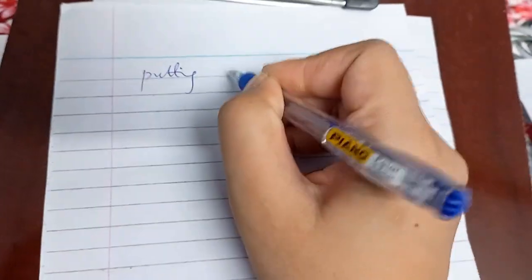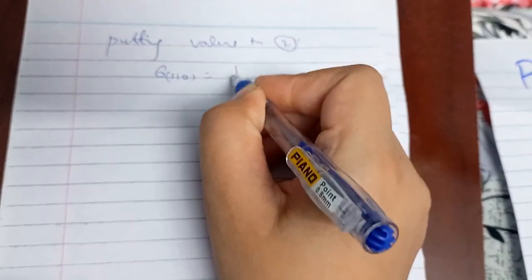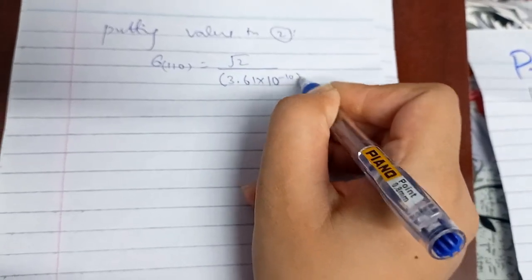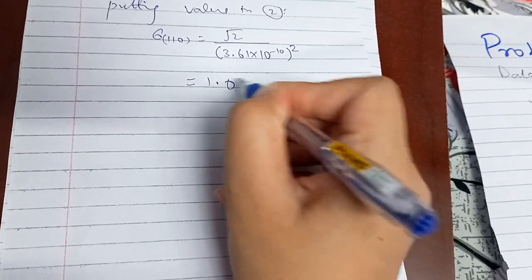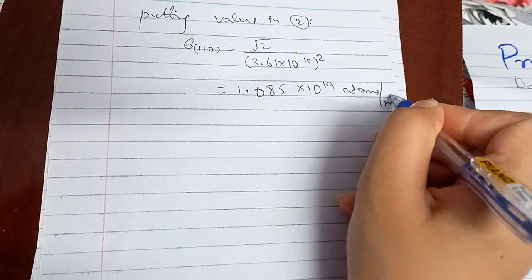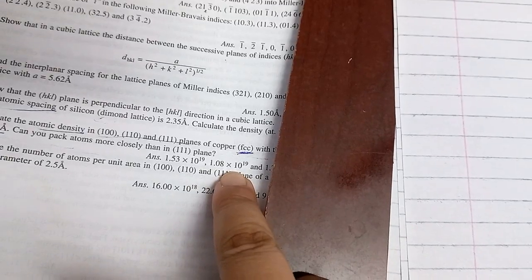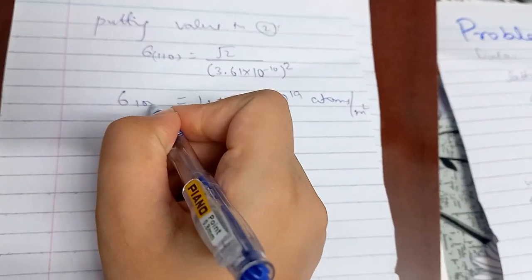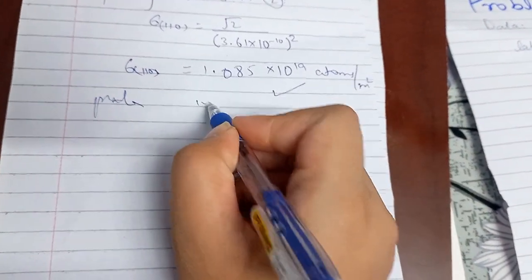Putting values into equation 2 for the (110) plane: σ₁₁₀ = √2 / (3.61 × 10⁻¹⁰)². On solving, we get 1.085 × 10¹⁹ atoms/m². The book gives 1.08 × 10¹⁹, so this is correct.